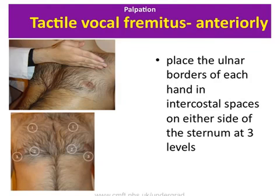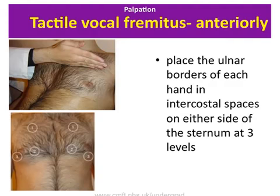An additional test which may be performed during palpation is tactile vocal fremitus. Fremitus refers to the palpable vibrations transmitted through the lungs to the chest wall when the patient speaks. It is best detected using the ulnar border of the hand. Fremitus should be felt for in three different parts of the chest wall on each side. Ask the patient: 'Would you mind saying 111 for me?' Compare the right and left sides at each step.